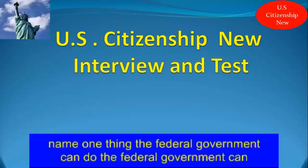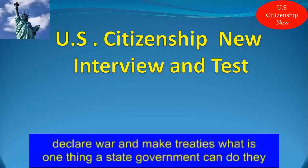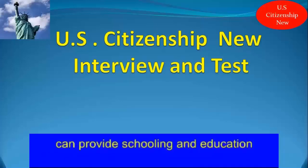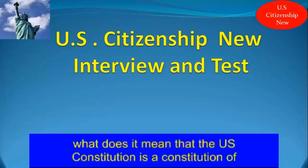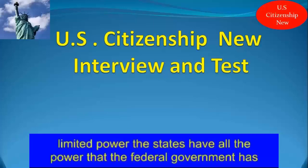Name one thing the Federal Government can do. The Federal Government can declare war and make treaties. What is one thing a State Government can do? They can provide schooling and education. What does it mean that the U.S. Constitution is a Constitution of limited power? The states have all the power that the Federal Government does not.